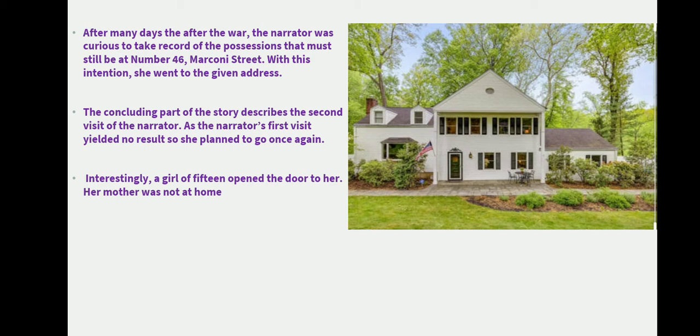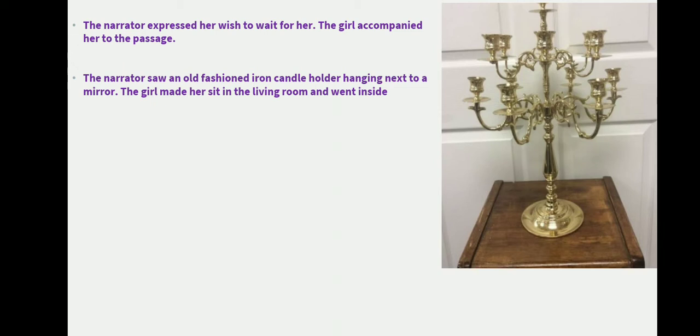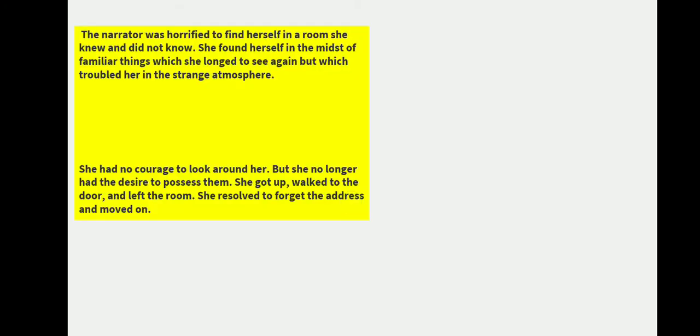She went back to the same house, the same address. This time a 15-year-old girl opened the door, who appeared to be Mrs. Doling's daughter. When the girl opened the door, her mother was not at home. The narrator said she would wait, and the girl invited her inside. Inside, the narrator noticed an old-fashioned iron candle holder placed beside the mirror. In this way the narrator was welcomed into the living room and she went inside.